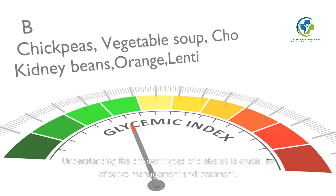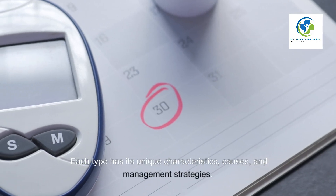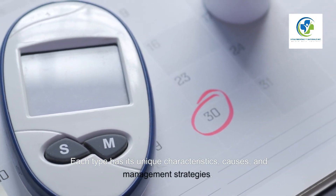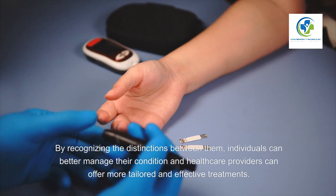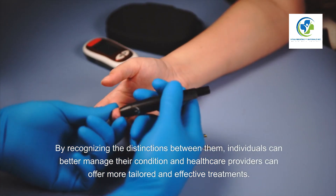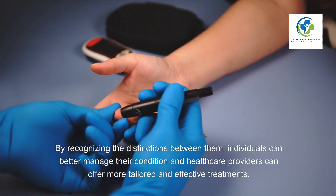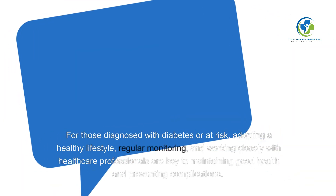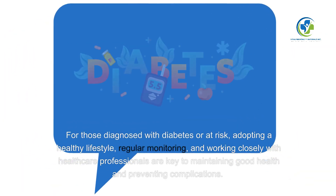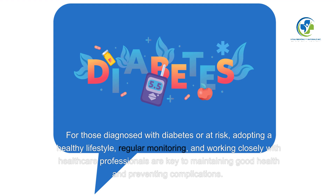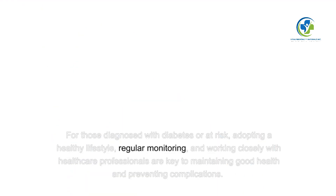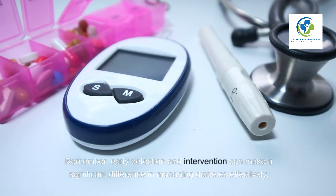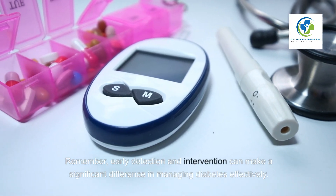Understanding the different types of diabetes is crucial for effective management and treatment. Each type has its unique characteristics, causes, and management strategies. By recognizing the distinctions between them, individuals can better manage their condition, and healthcare providers can offer more tailored and effective treatments. For those diagnosed with diabetes or at risk, adopting a healthy lifestyle, regular monitoring, and working closely with healthcare professionals are key to maintaining good health and preventing complications. Early detection and intervention can make a significant difference in managing diabetes effectively.